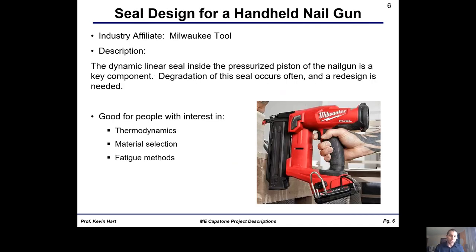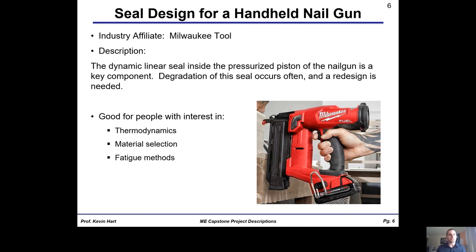Milwaukee Tool has a lot of cool projects over the years. This year they're proposing an investigation of a seal used in their nail guns. There's a seal inside the nail gun that has a fatigue life not currently acceptable to them. They want to redesign one of the seals inside that nail gun with a new material, new size, or maybe an entirely new design. If you have interest in thermodynamics, material selection, and fatigue methods, this might be something you'd be interested in.